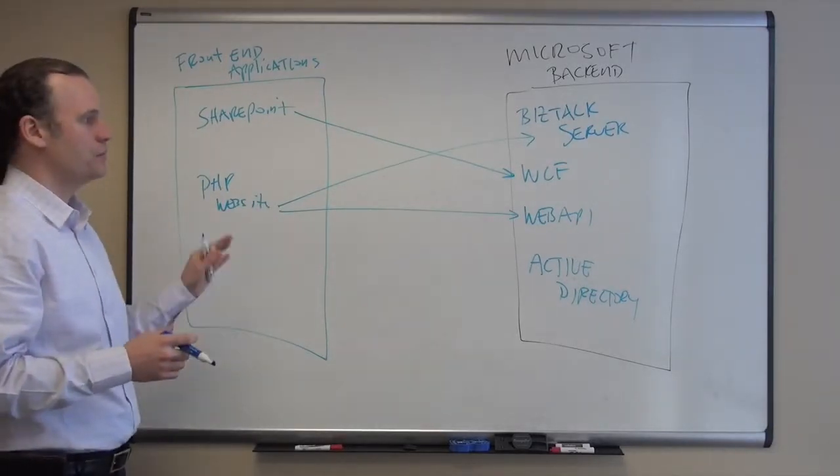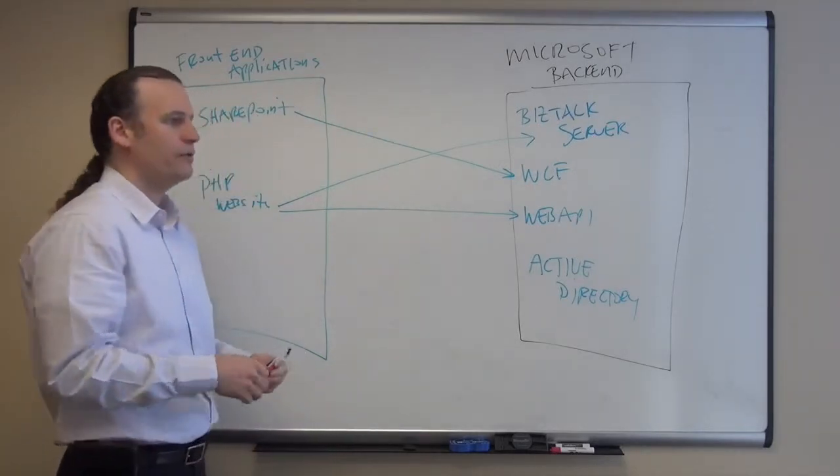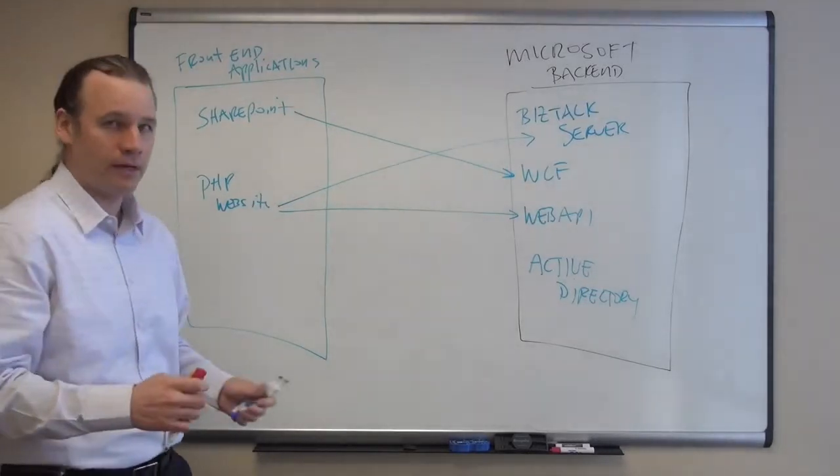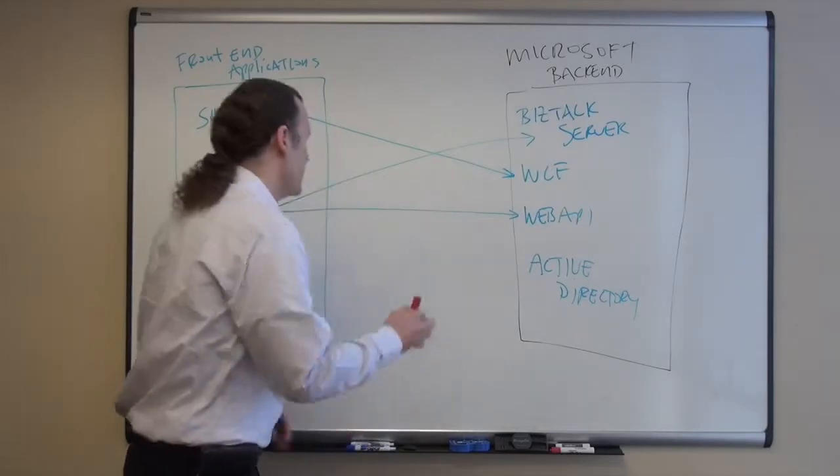However there are a couple of problems with this approach. And I want to list out some of the key areas where you have challenges with an architecture like this. And then I want to talk about how Intermediary for Microsoft can help you with these challenges. Why don't we list out some of the key challenges.